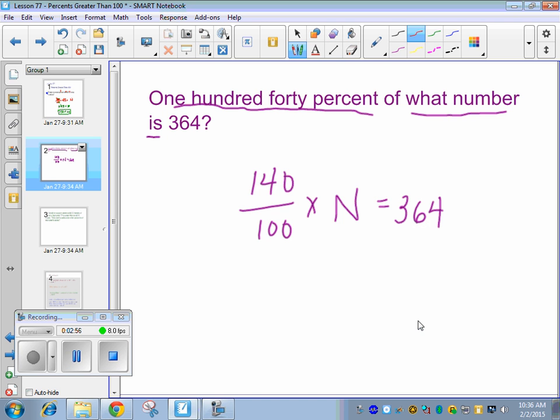On this one, do we need to do an algebra step to solve for N? Yes, we do. We're going to multiply by the reciprocal. So we have 140 over 100. We're going to multiply by 100 over 140, so that we can cancel. And then the same thing on this side, 100 over 140.